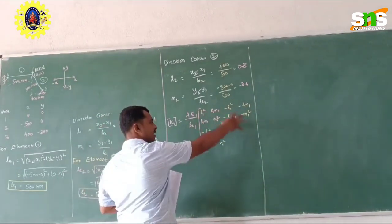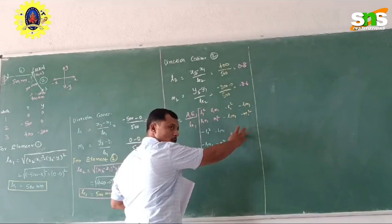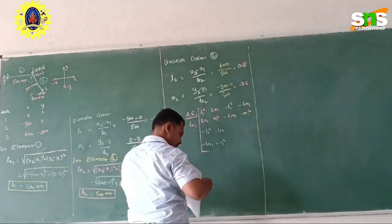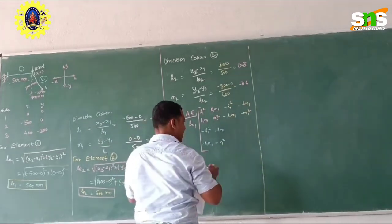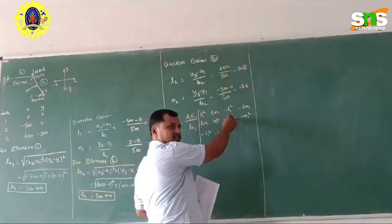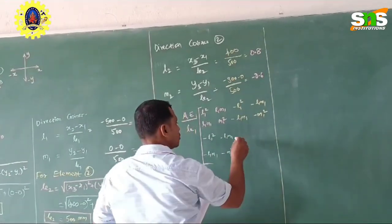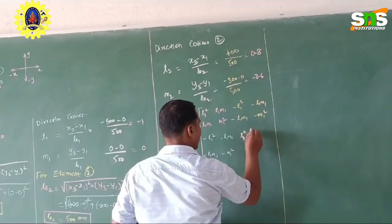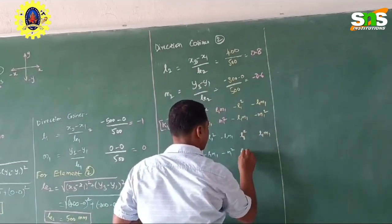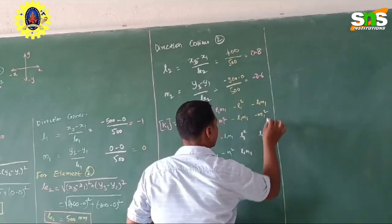Once you have written this, now you can see quadrant number 4. What will be the values here? This quadrant has negative sign and this quadrant also has negative sign — so what will be here? Positive values. So l1 squared, l1 m1, l1 m1, m1 squared.